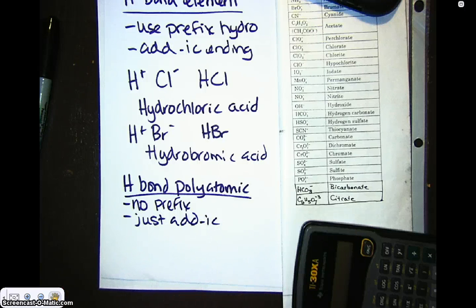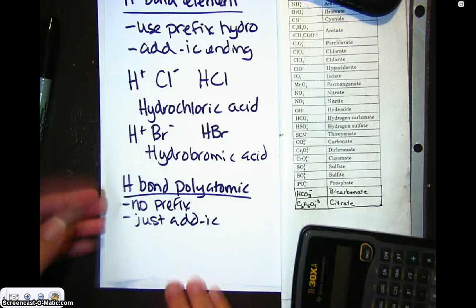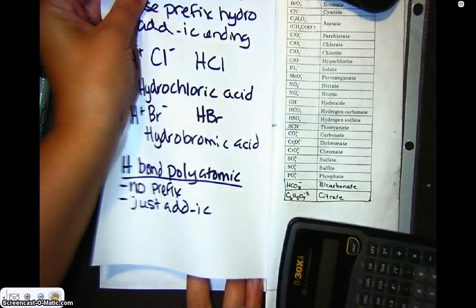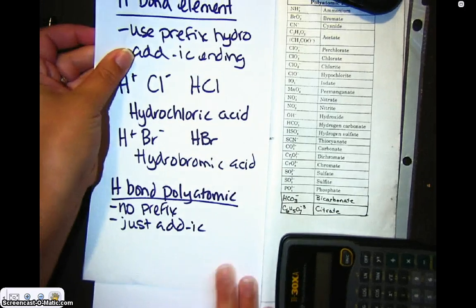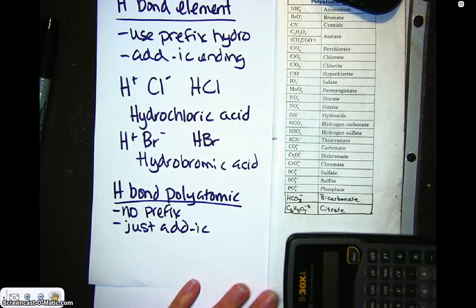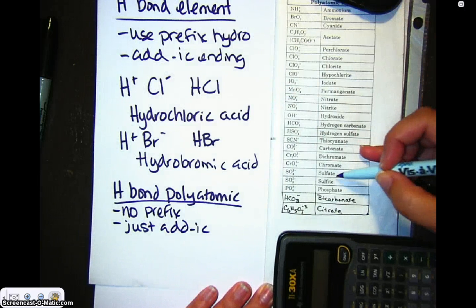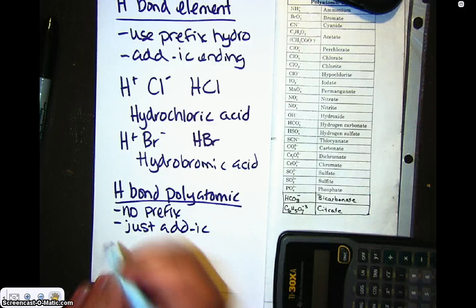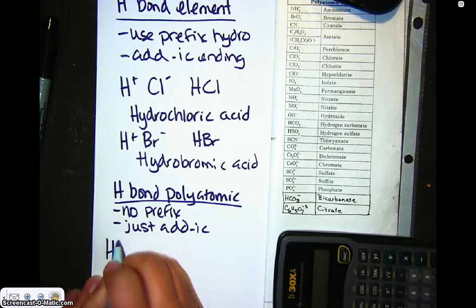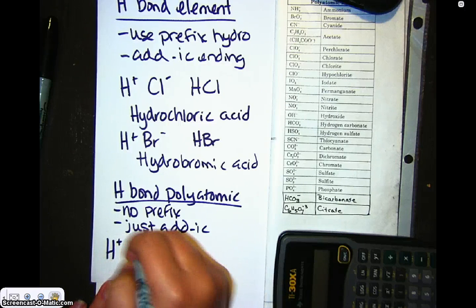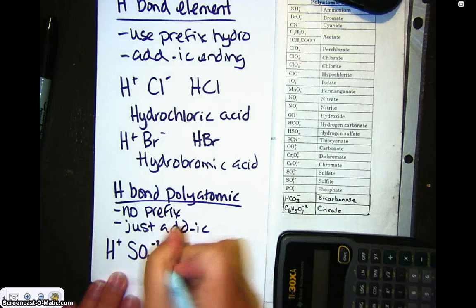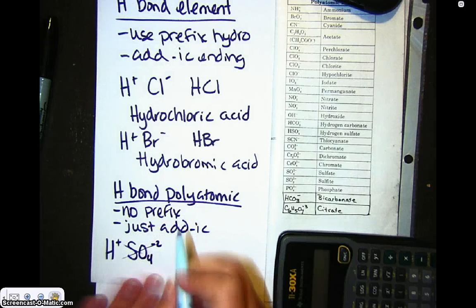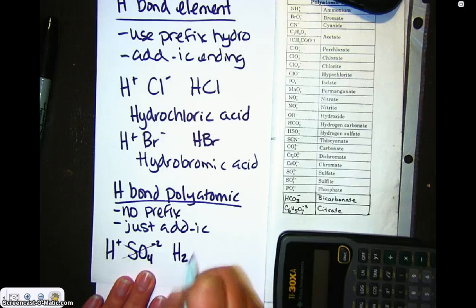We have some polyatomics over here. Let me just pick one out that's a common one. Let's pick sulfate. Sulfate is SO4 with a minus two charge. So hydrogen is a plus one. SO4 is a minus two. So again, remember we criss-cross down. So we get H2SO4 is the formula.